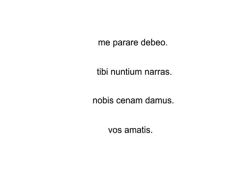For second person singular: you are telling the news to yourself. We know it's 'you' because of the S on the end. It's reflexive because both the subject and the pronoun are second singular. Or we could use first plural: 'damus' means we give — we know it's 'we' because of the -mus ending. We give dinner to ourselves. We added 'selves' because it's plural and reflexive — both are first plural.